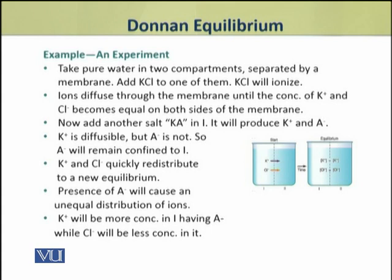Let us call it KA. It will also dissociate and produce potassium ions and anion A. The potassium ion is diffusible but anion A is not. So anion A will remain confined to compartment number 1.